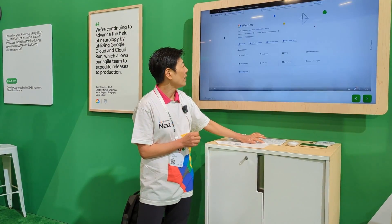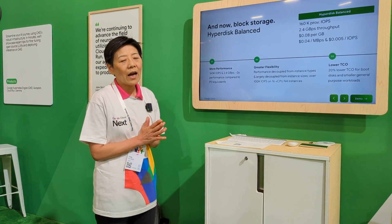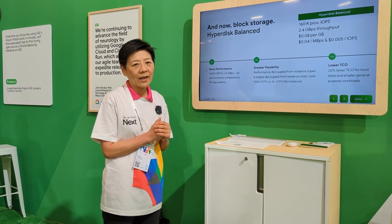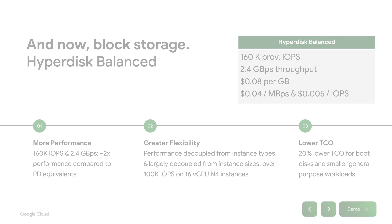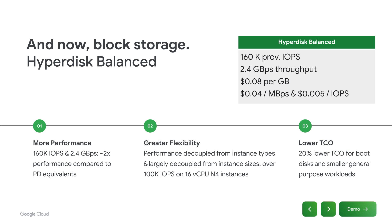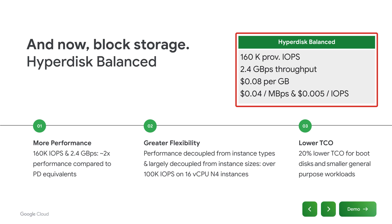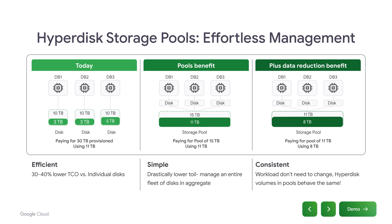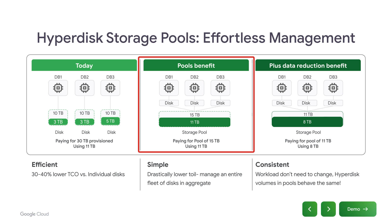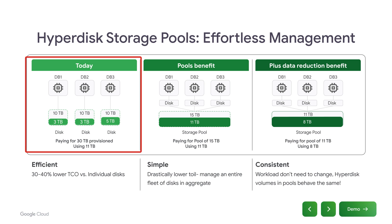Now I'm going to jump to hyperdisk. Hyperdisk is a unique product offered by GCP which works with our CPUs and virtual machines. It creates much higher performance in terms of IOPS as well as throughput. What I'm excited to talk about today is hyperdisk storage pools, which allow customers to combine storage capability shared among different workloads instead of provisioning each workload separately.